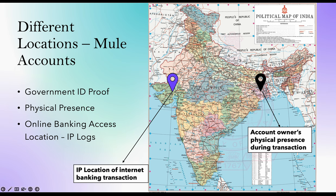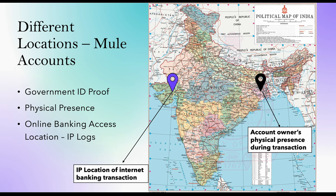Identifying rented or mule accounts is very important from an investigation and court perspective. As you can see in the screenshot of India's map, a bank account — for example ICICI Bank — has its owner's address in West Bengal, and the account owner is physically present in West Bengal. But when the UPI transaction happened and the account was accessed via net banking, the login IP was from Gujarat. By this, you can prove that the account owner was physically in West Bengal but the IP login was from Gujarat — this is one indicator to identify a mule account.